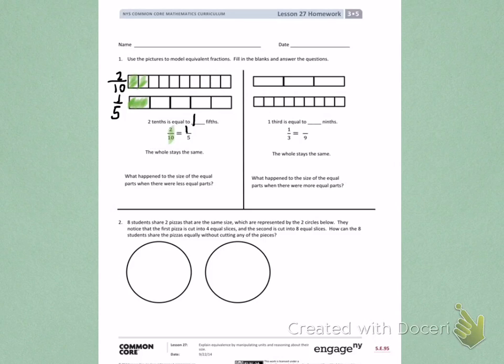The whole is staying the same. We're looking at the question down below. What happened to the size of the equal parts when there were less equal parts? So when I have fifths down here, what happened to their size? Did they get smaller or did they get bigger? When I look at those fifths, they're bigger than the tenths. So the parts got bigger.